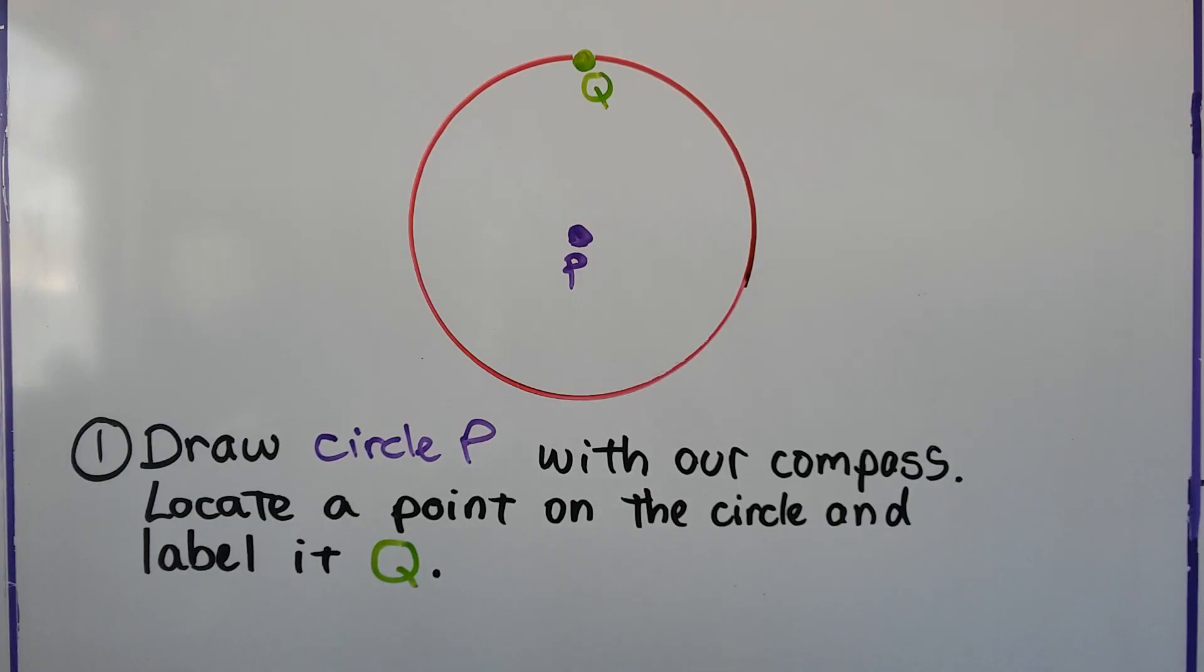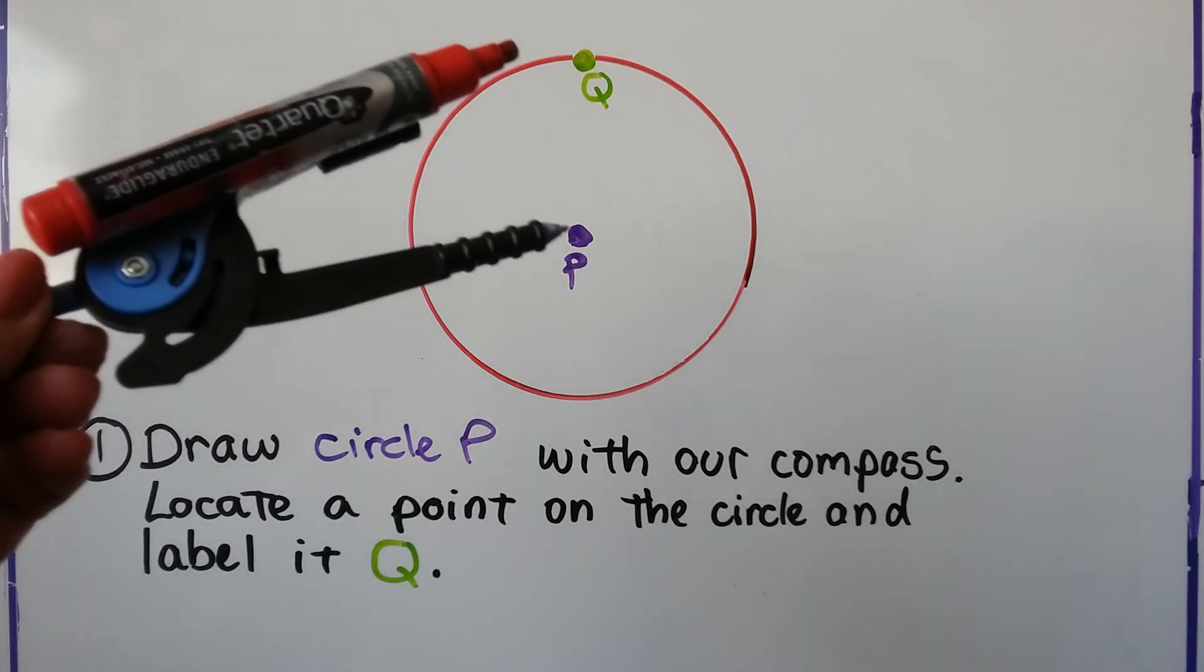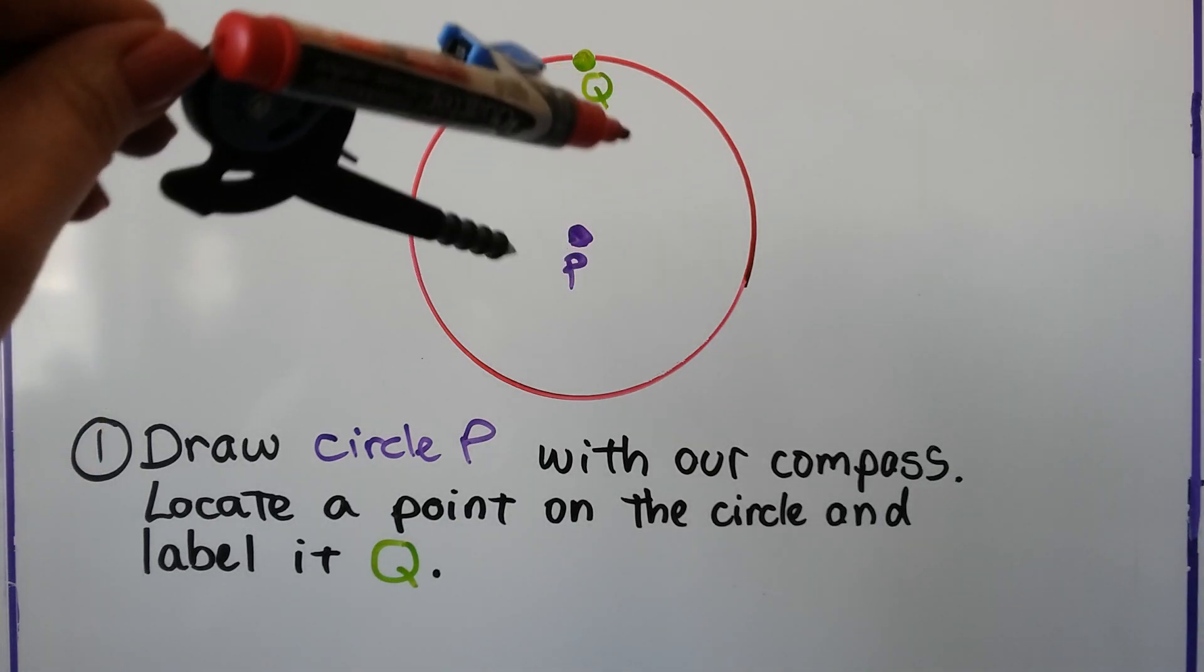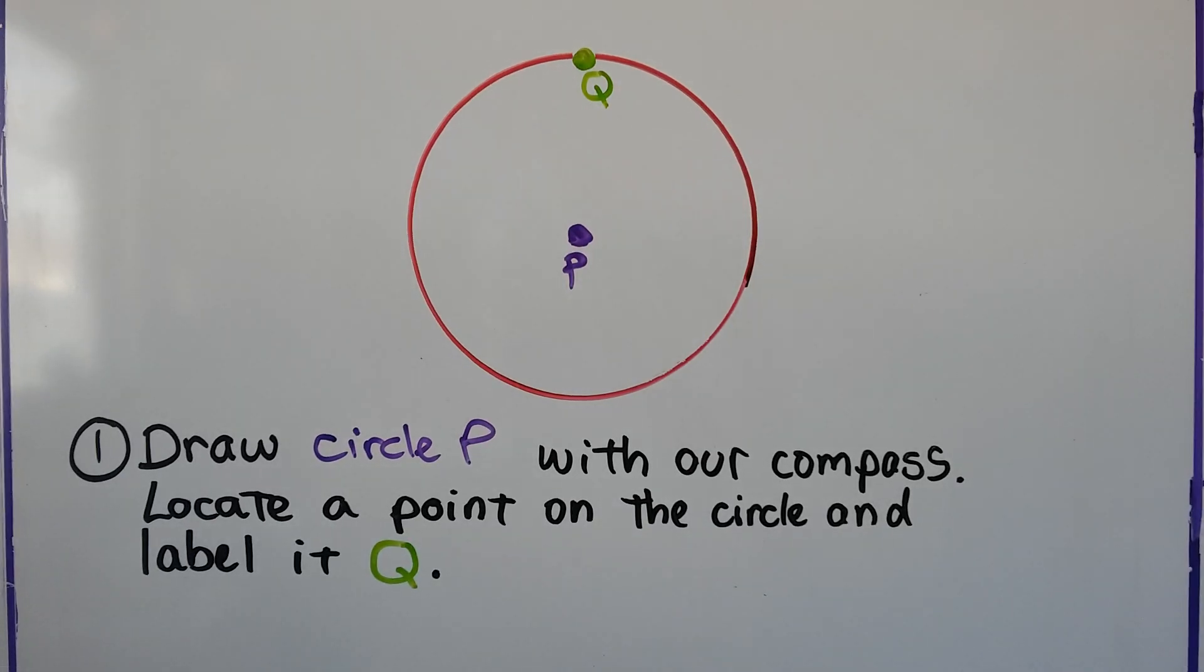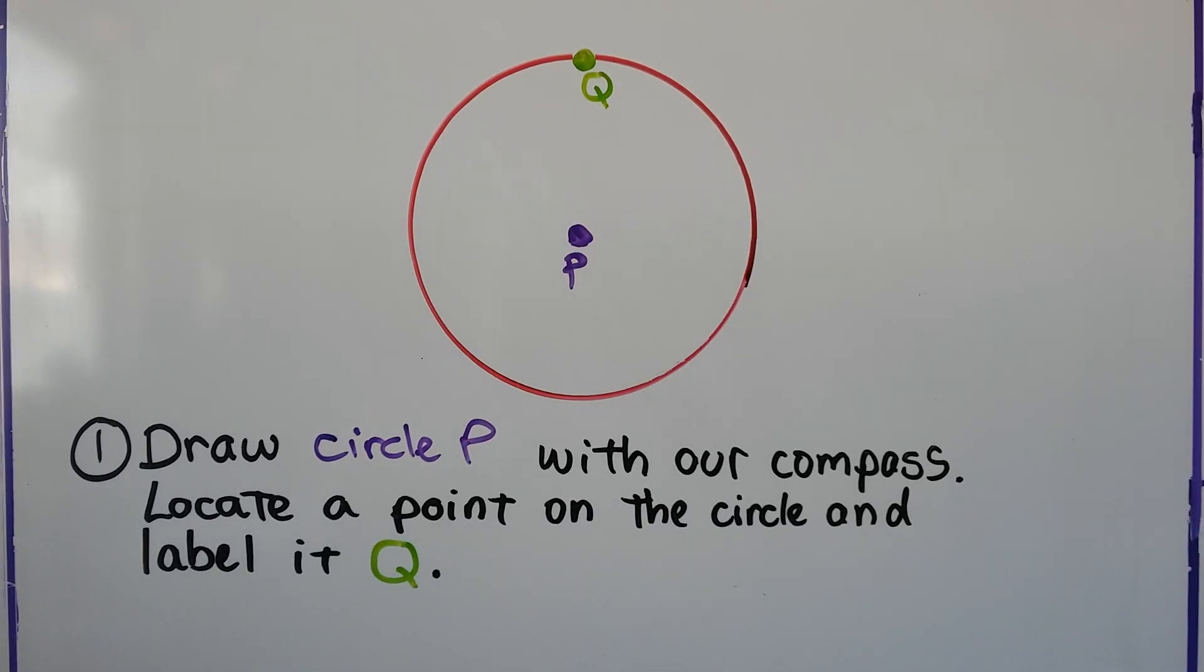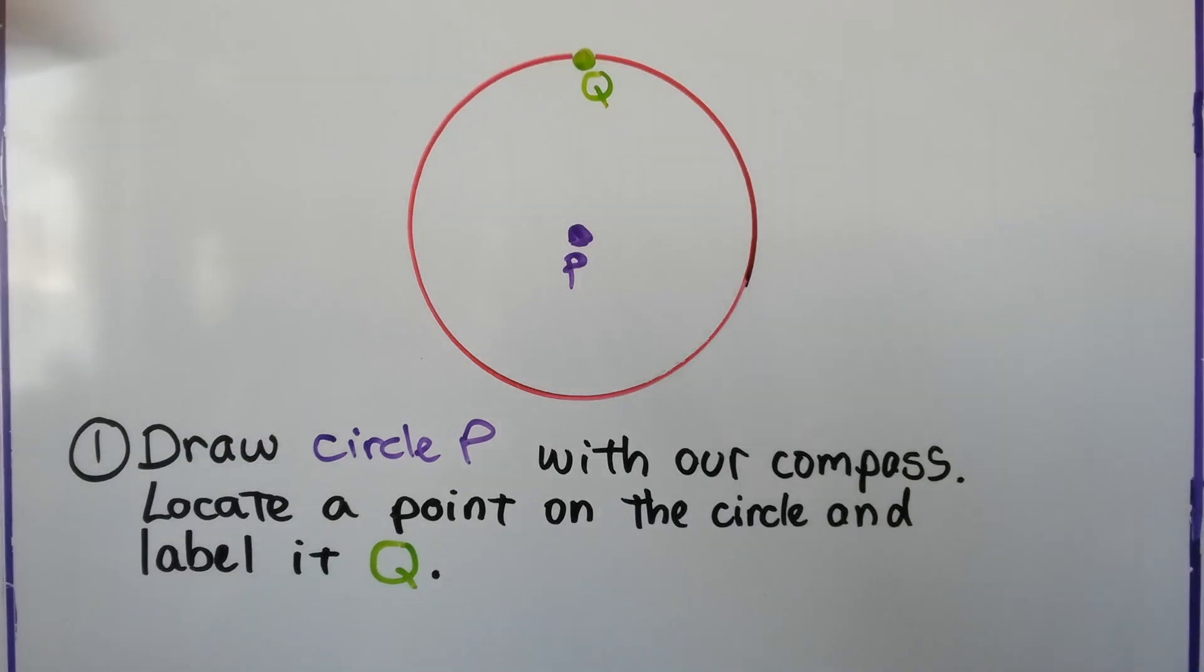So the first thing we're going to do is pick a point like this, and we're going to draw our circle with a compass. We're going to locate a point on the circle and label it Q.